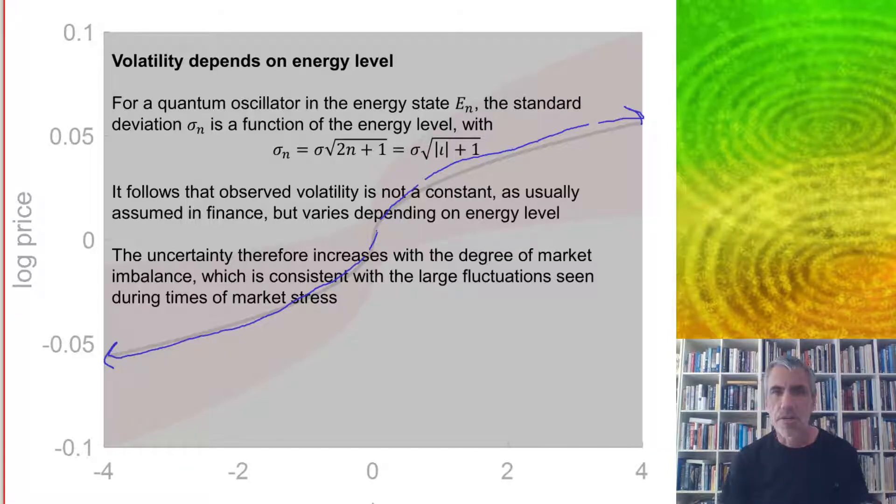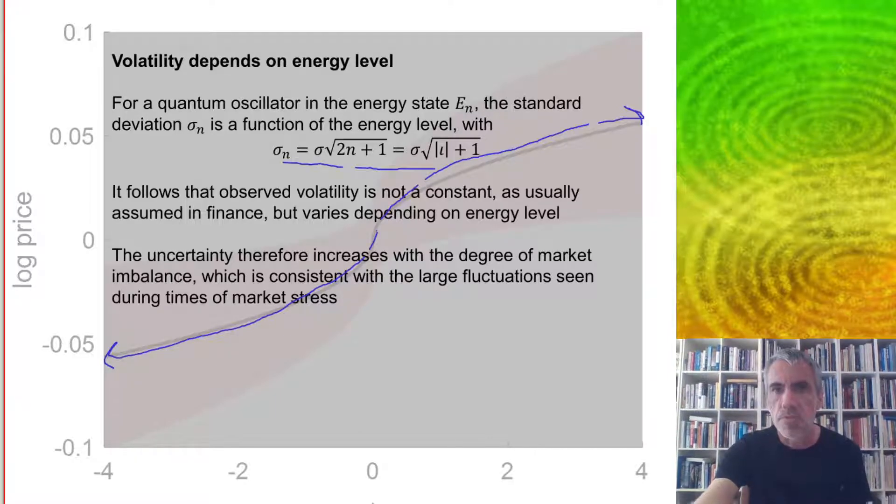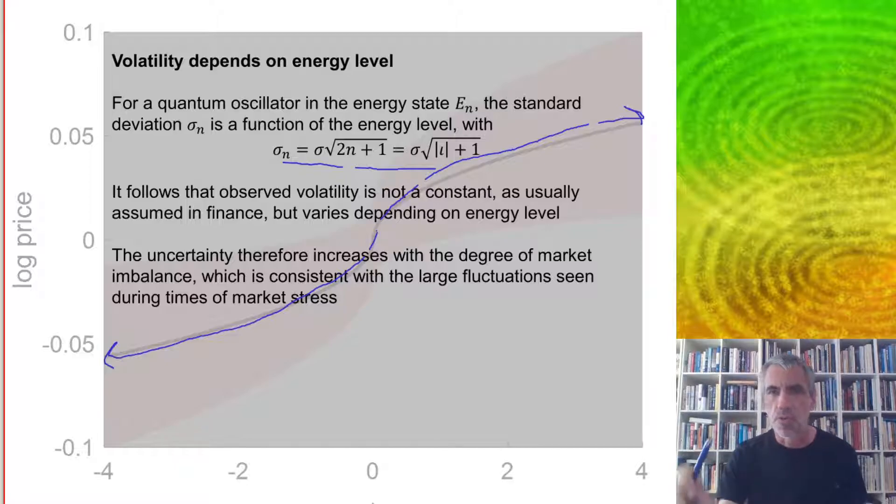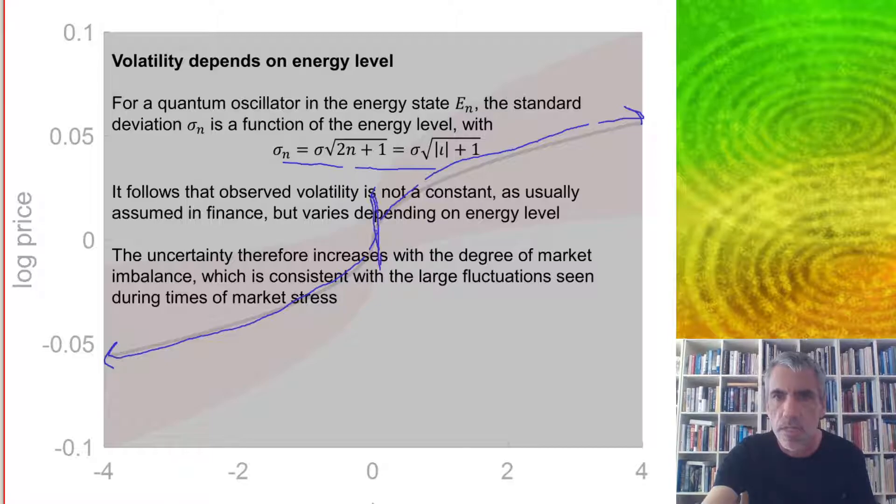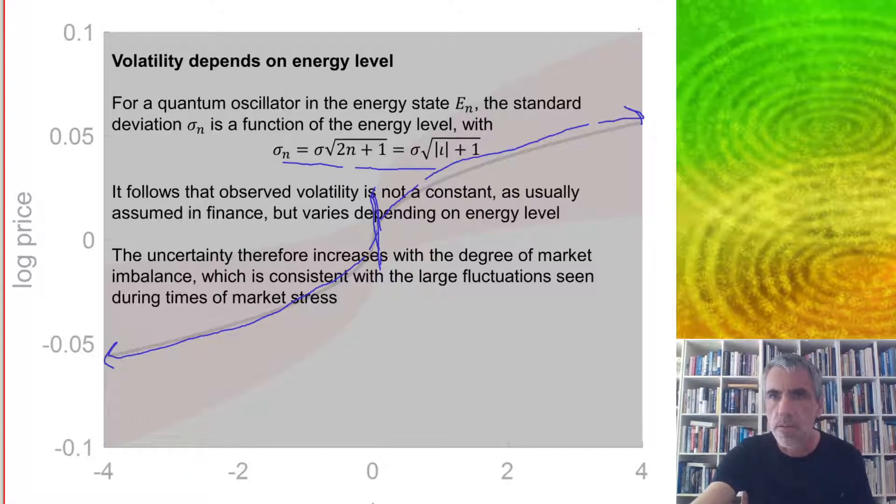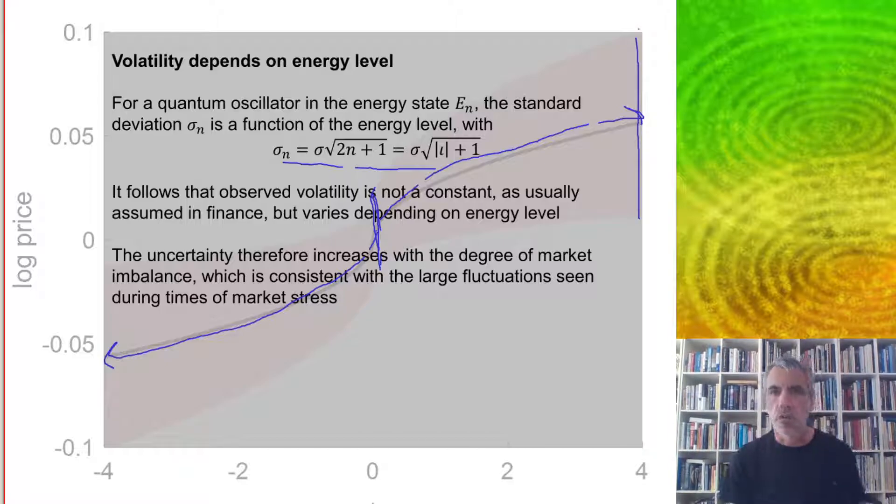And one interesting thing about this is that for a quantum oscillator in the energy state EN, the standard deviation sigma N is going to be a function of the energy level. So sigma N is equal to sigma times the square root of the absolute value of IOTA plus one. So it follows that observed volatility is not a constant as usually assumed in finance but varies depending on energy level. And this uncertainty therefore increases with the degree of market imbalance which is consistent with large fluctuations seen during times of market stress. So for example in a balanced market our plus or minus sigma is like this but when we go for a large imbalance then this can grow considerably.